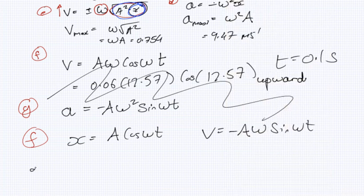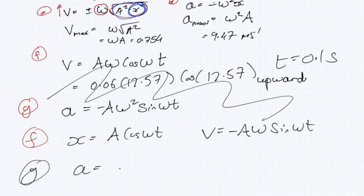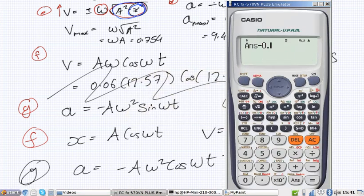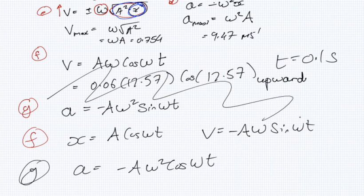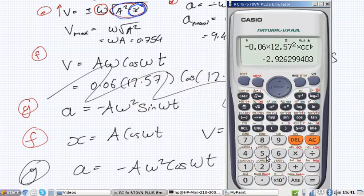Okay. And now part G, the acceleration is minus Aω² cos ωt. So that would be minus 0.06 times 12.57 squared times cos 12.57 times 0.01, upwards at 2.926 meters per second squared.